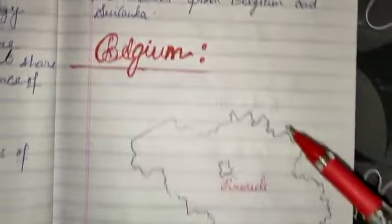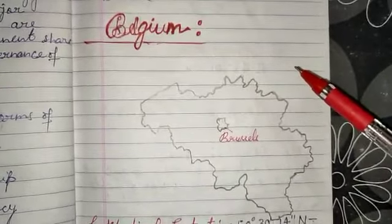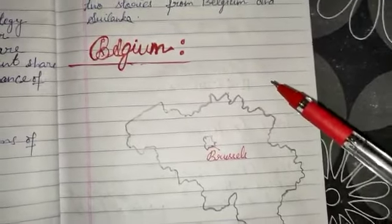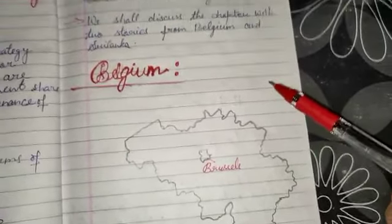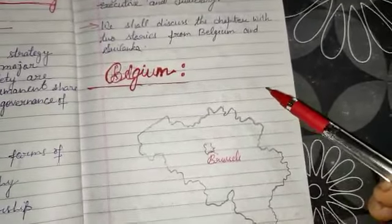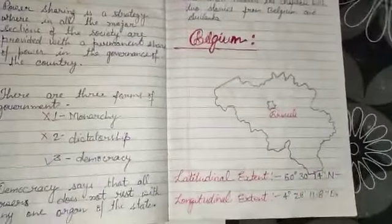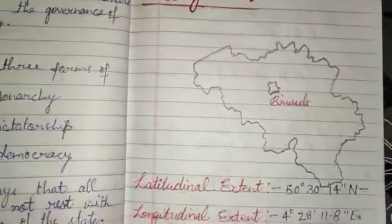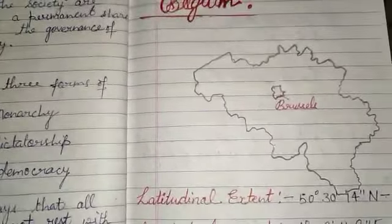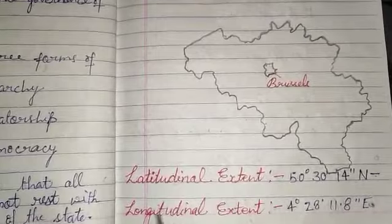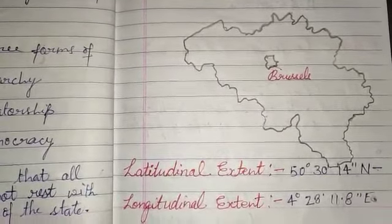We shall try to understand why power sharing is necessary in democracy — what happens in the presence of power sharing and what happens in its absence. Before knowing the other factors, we should know the geographical location of Belgium. Belgium is situated in the European continent. We should know the latitudinal extent of Belgium.